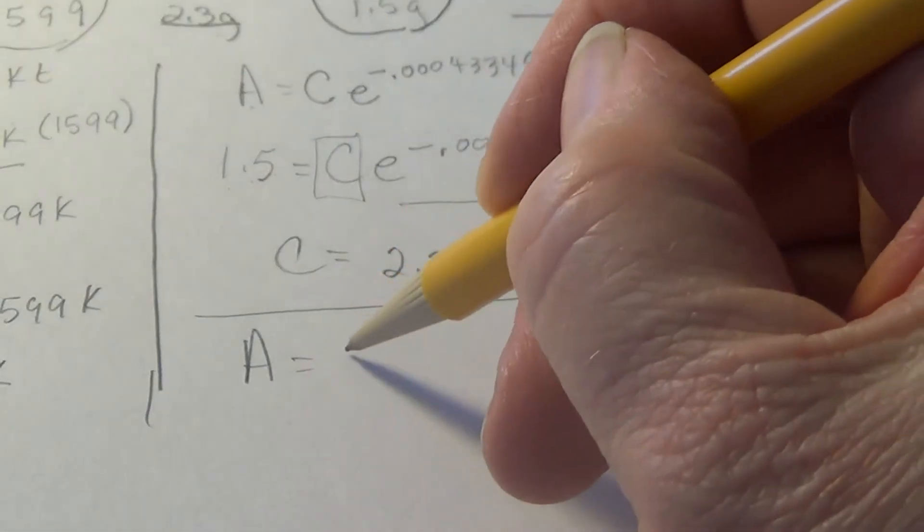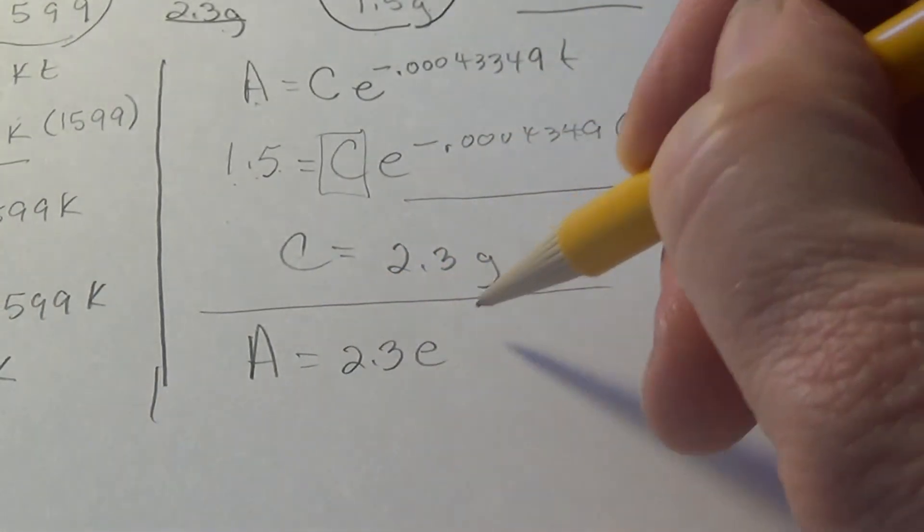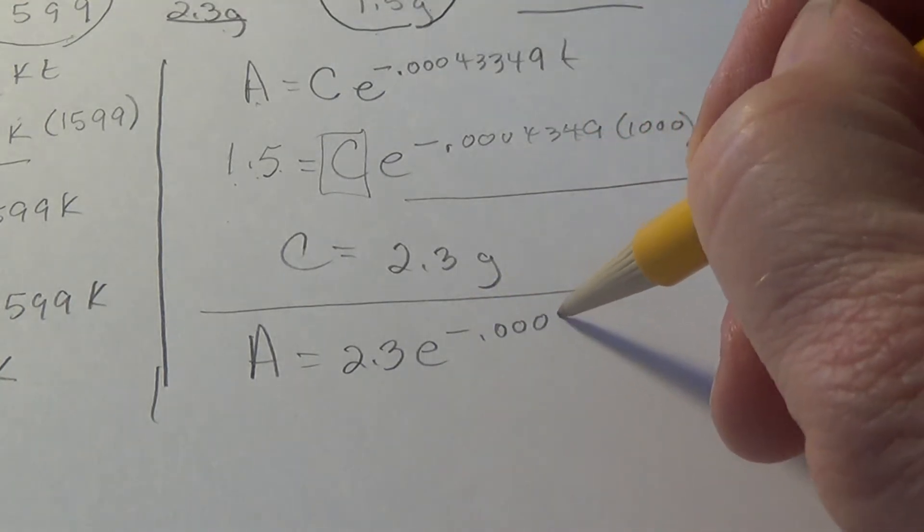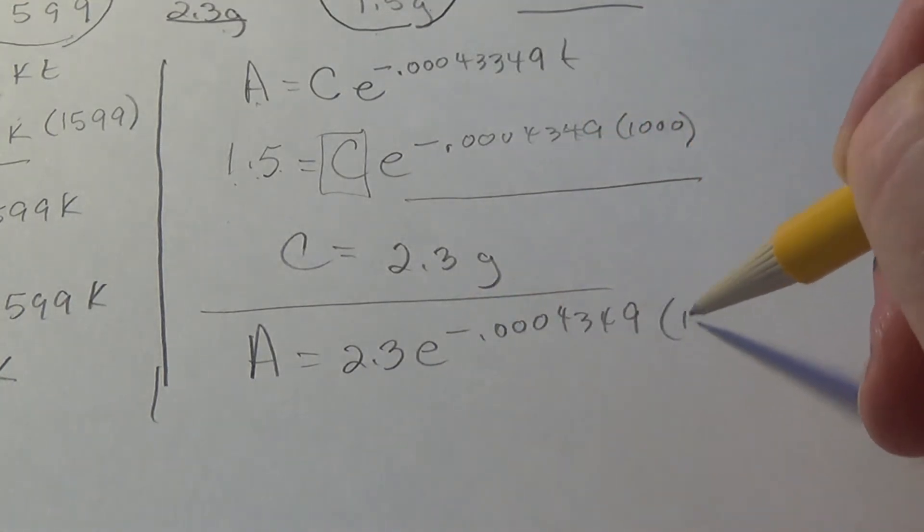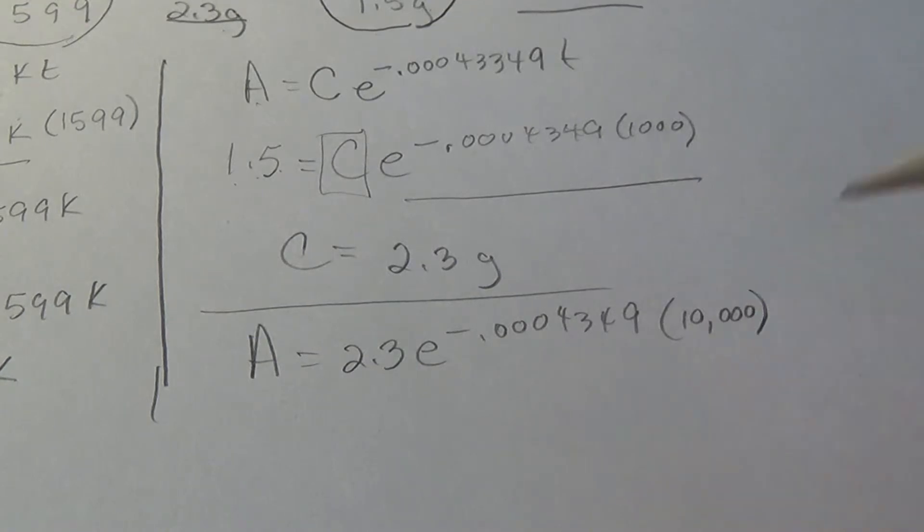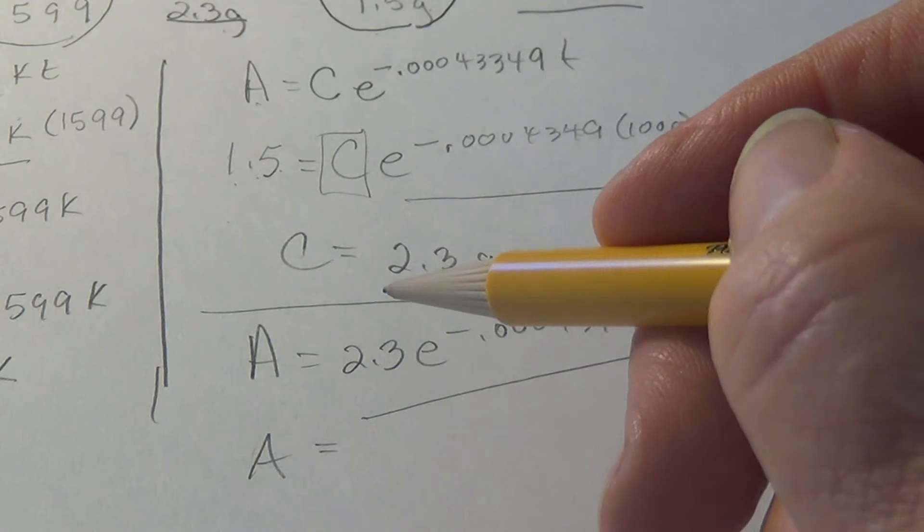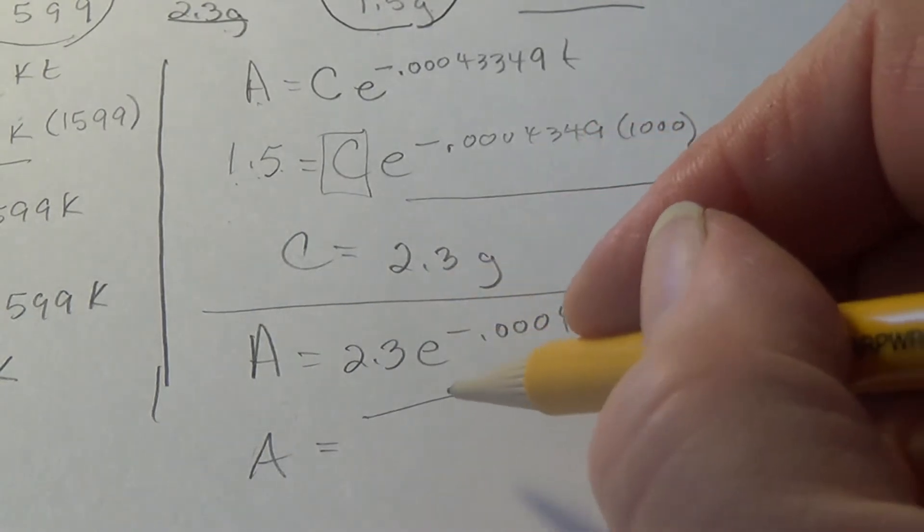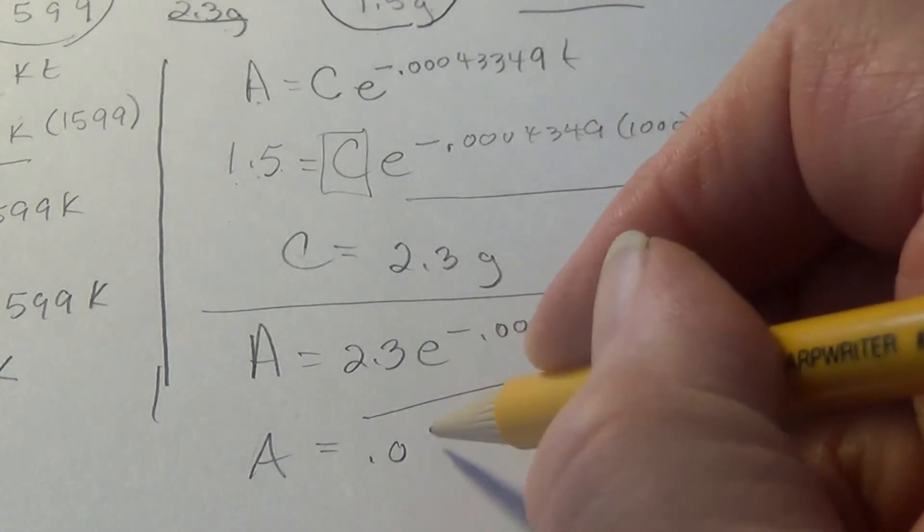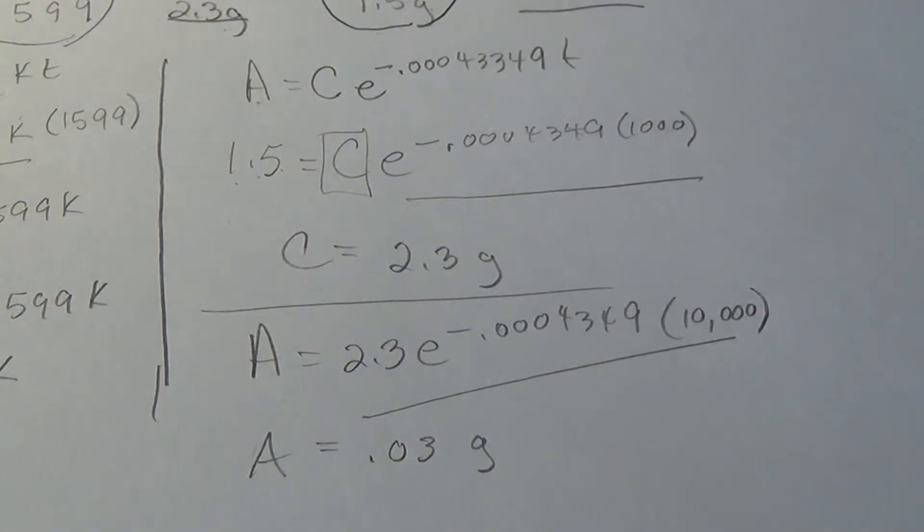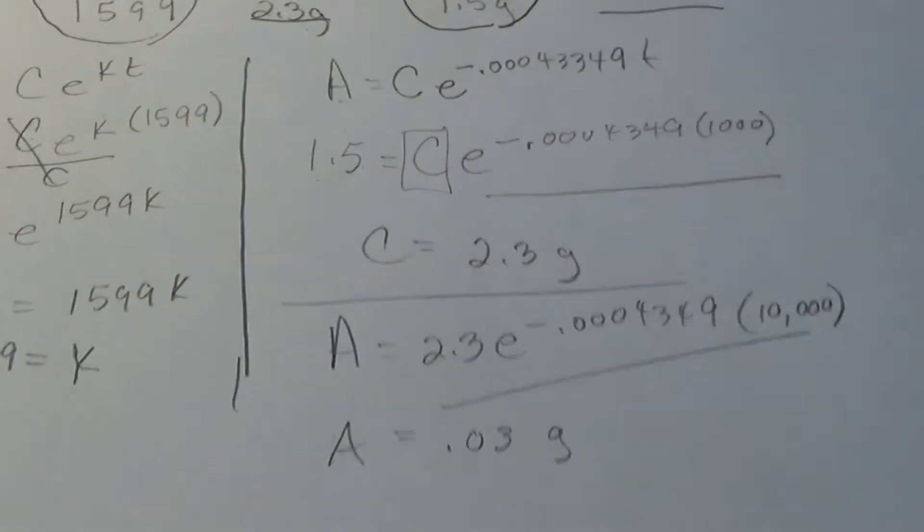I'm not going to actually discuss it much, but now we want the amount at 10,000 years. So we have C, E to the K, we have K, and the time is 10,000. So just plug and chug that, and we found it came out to not much left in 10,000 years, 0.03 grams.